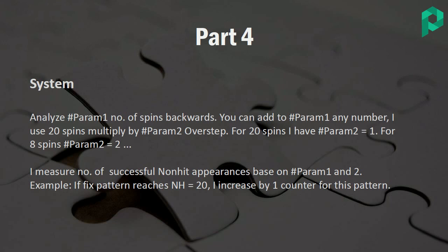The second set is also 20 spins in a row, so in general I need 40 spins before I can apply the analysis precisely. I can start earlier, but it's up to you. I also measure the number of successful non-hit appearances based on parameter one and two.